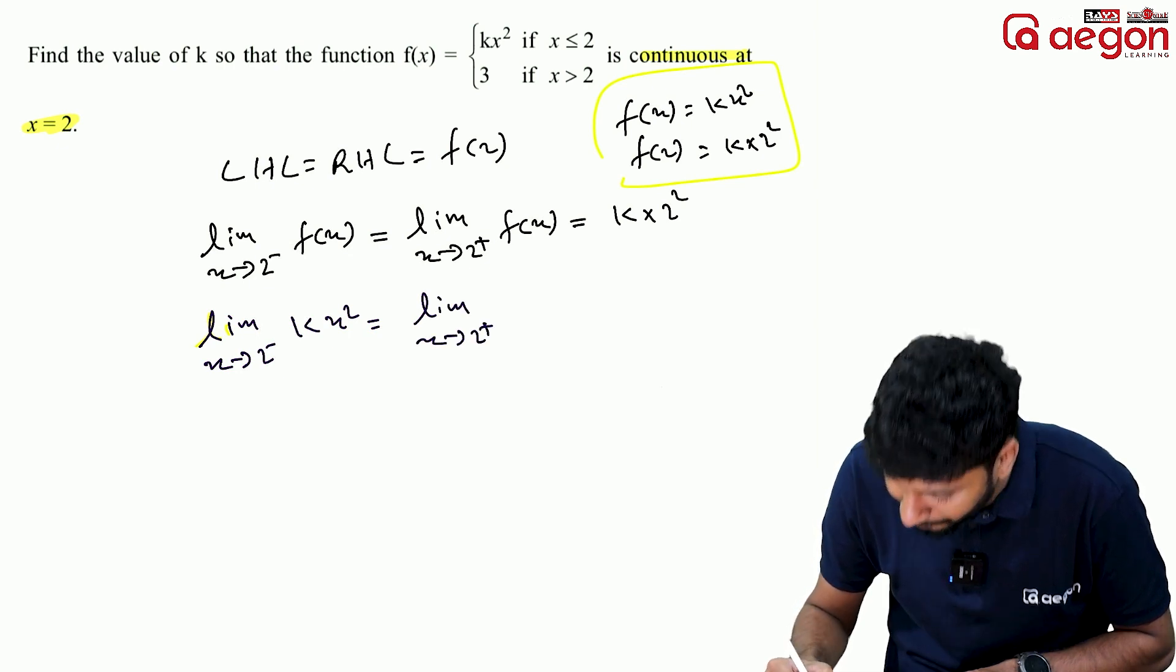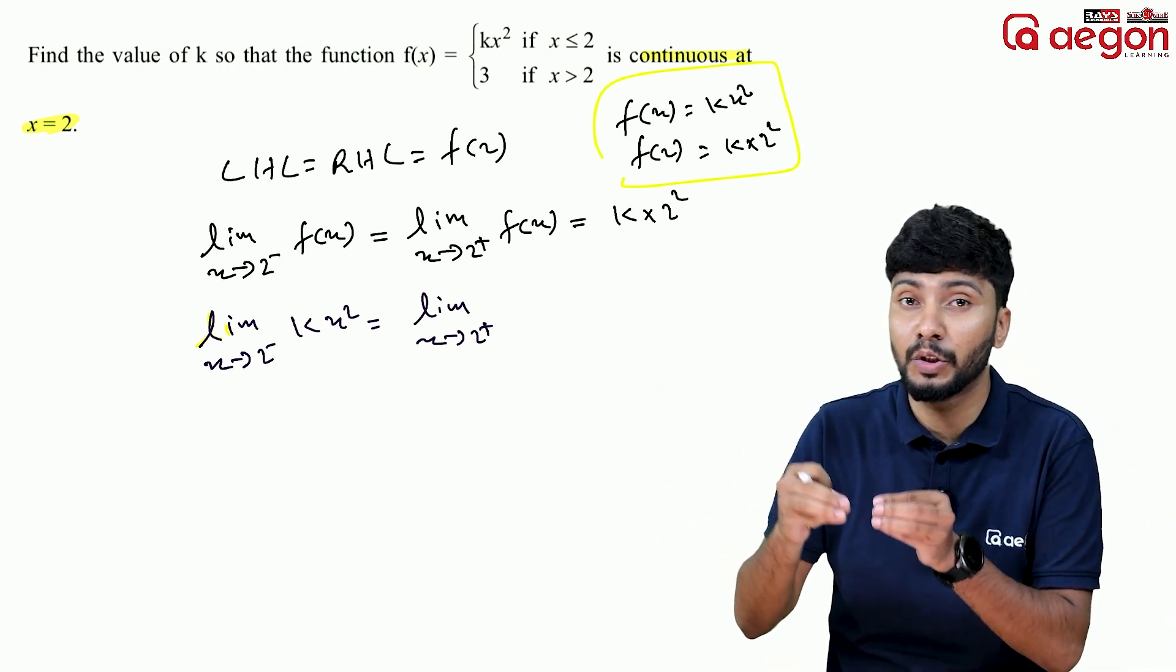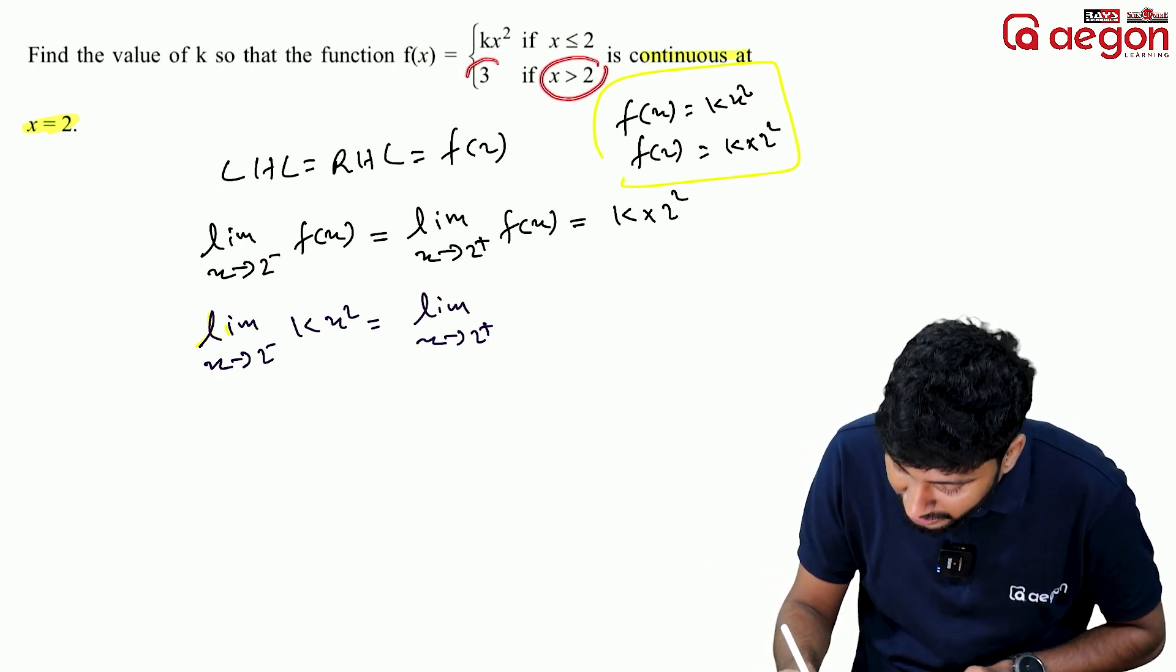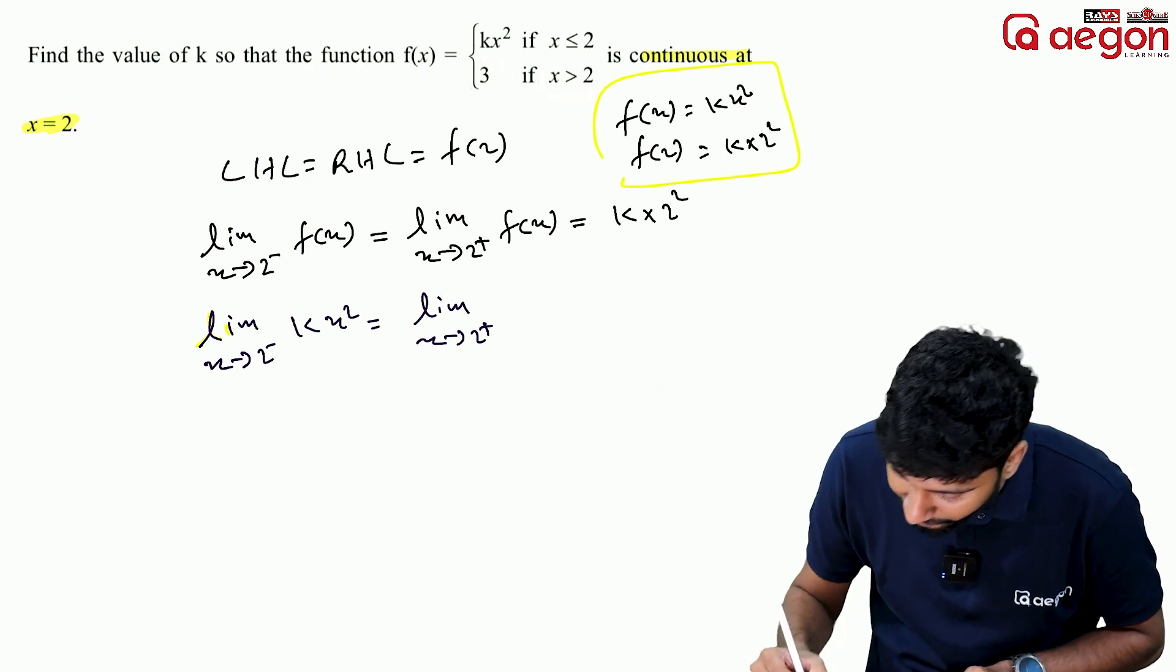Limit x tends to 2 plus, on the right side when x is greater than 2, the function value is 3.